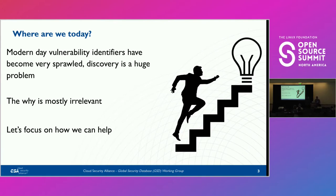Where are we today? I like to describe this as the problem with modern vulnerability identifiers — it's become difficult to find them all. There are tons of sources: things like CVE, things like GitHub, and many more. We put it in our notes not to start naming everything right here. There's all these weird problems, and I don't want to obsess over the problems. We are all here because we understand this is a space that has enormous opportunity, and we want to focus on what we can do to help.